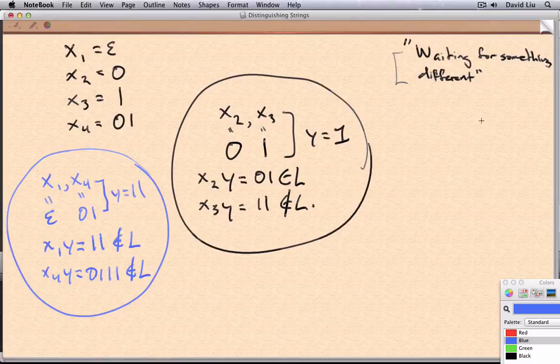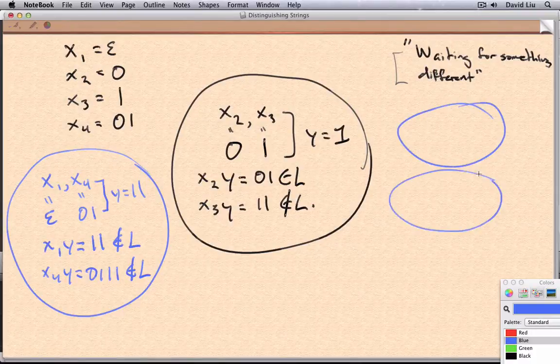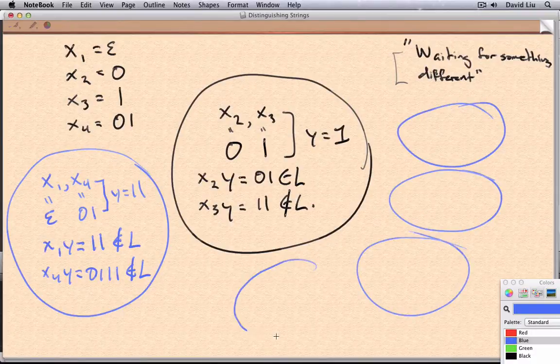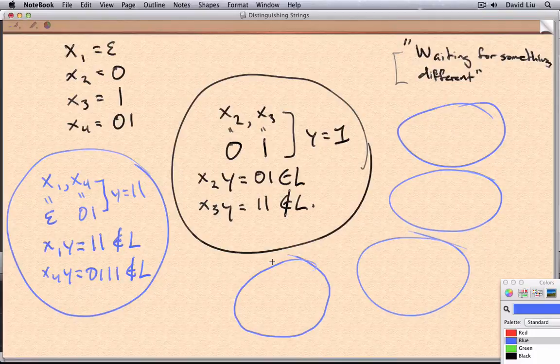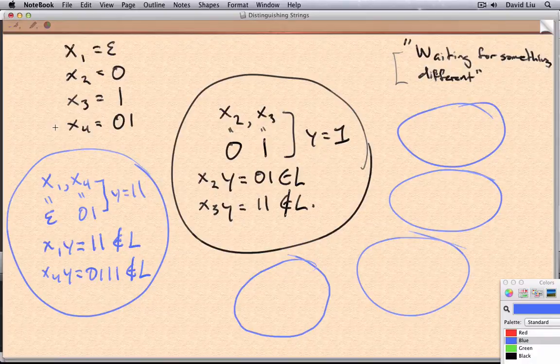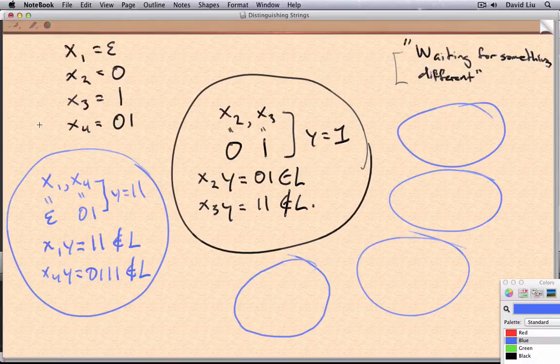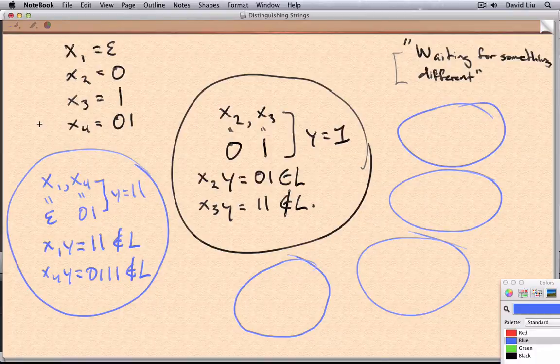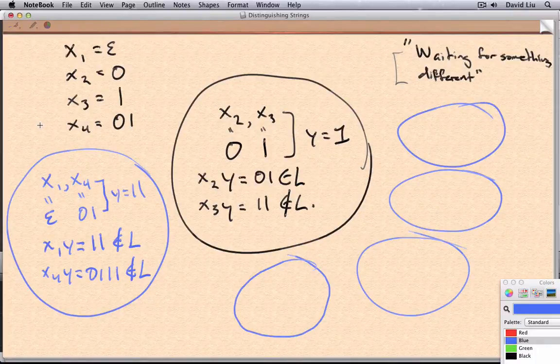So keep in mind that we really need to check six different pairs. But then once we do, we can conclude that all four of these strings have to reach different states in any DFA accepting the original language. And therefore, this language can't be accepted by a DFA with three or fewer states.